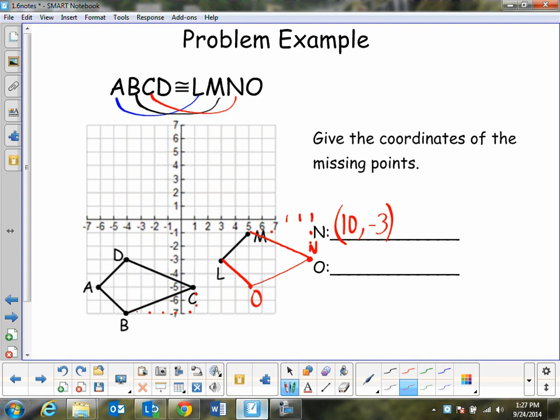And then for O, it's at 6, negative 5. Is there any other possible answers? There could be. So let's check.